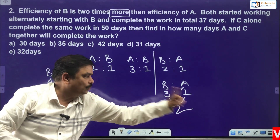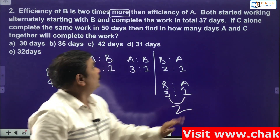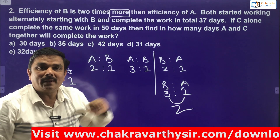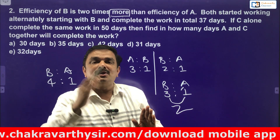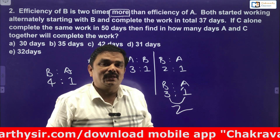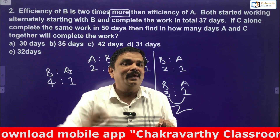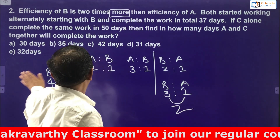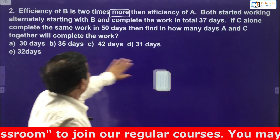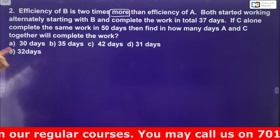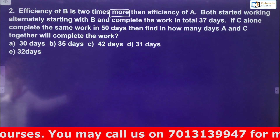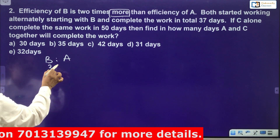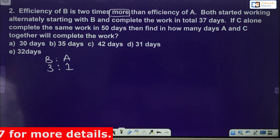To summarize: B is twice as efficient as A means 2 is to 1. Two times more means 3 is to 1. B's efficiency is 4 times more than that of A means B is to A is 5 is to 1. Now applying this to our problem: efficiency of B is 2 times more than that of A — so B is to A is 3 is to 1. That means B has an efficiency of 3 units per day and A has 1 unit per day.